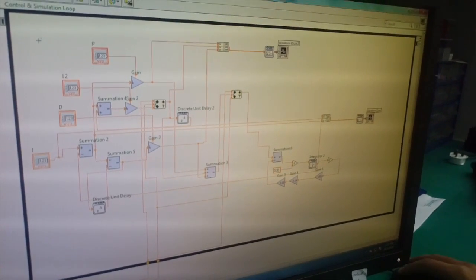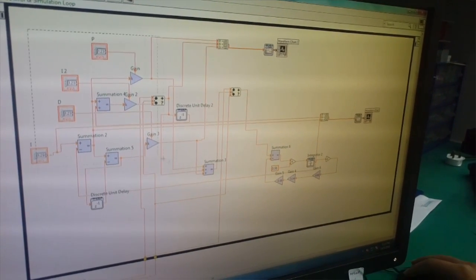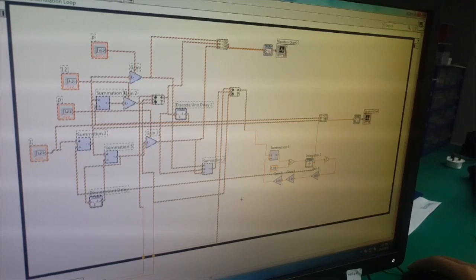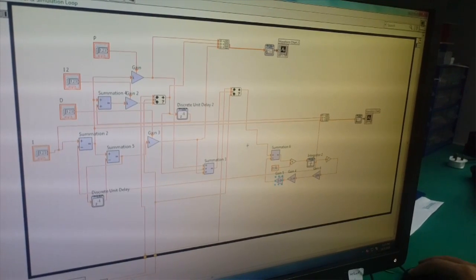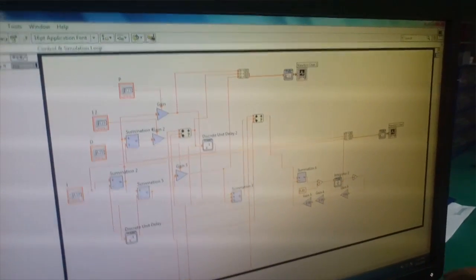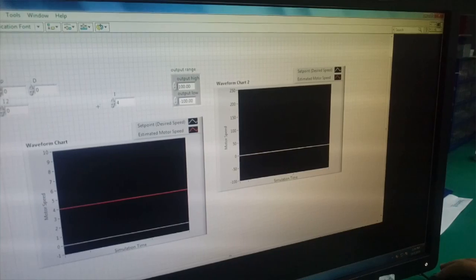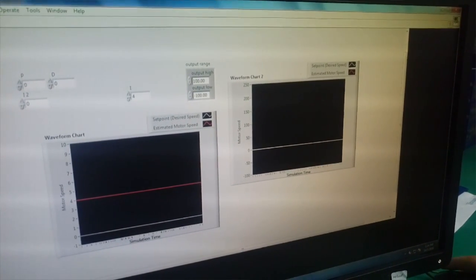Now I will show you the PID water level. This is the PID circuit and this is the water level. Then the result of PID water level is like this.